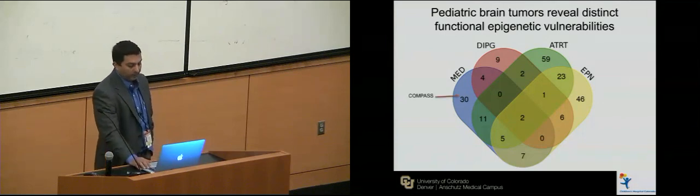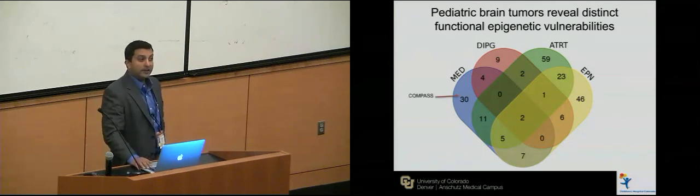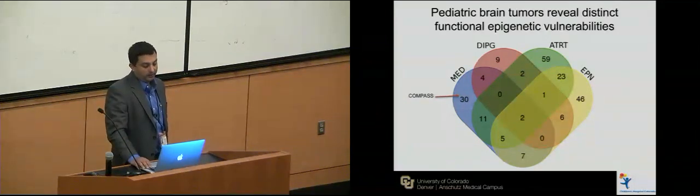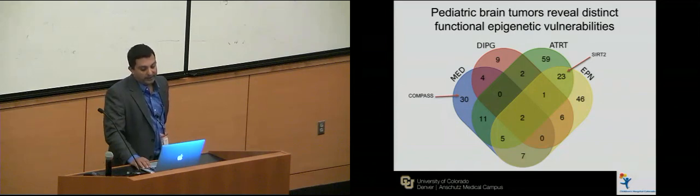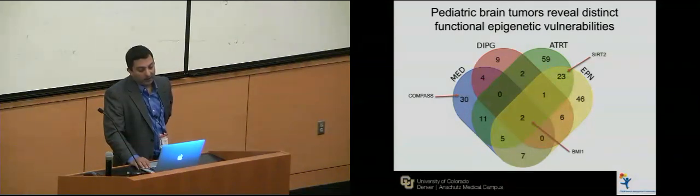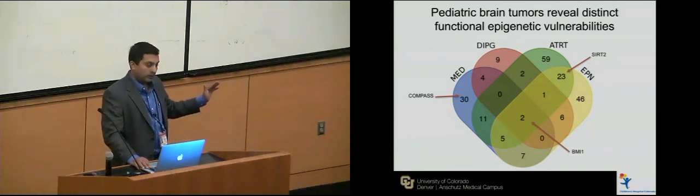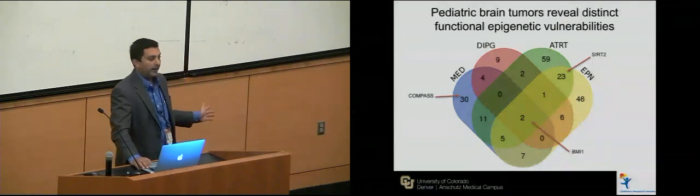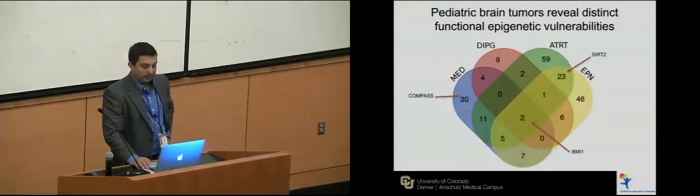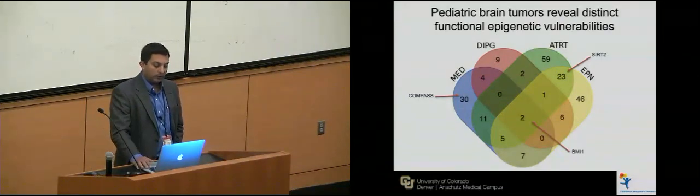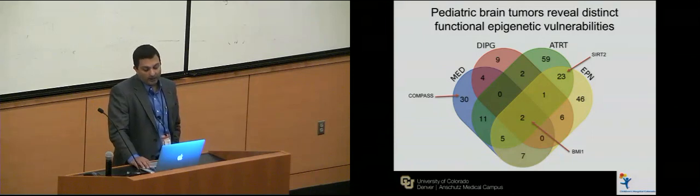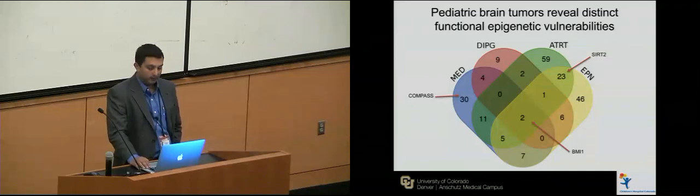We identified the COMPASS-like complex as a major hit in MYC-driven medulloblastoma, SIRT2 as a major hit in ATRT and a lower hit in ependymoma, and BMI1 in DIPG — which also turns out to be a known target in medulloblastoma from about a decade and a half ago, so it's a hit in multiple tumor types. We've worked on several other molecules as well, but these three have the most data.